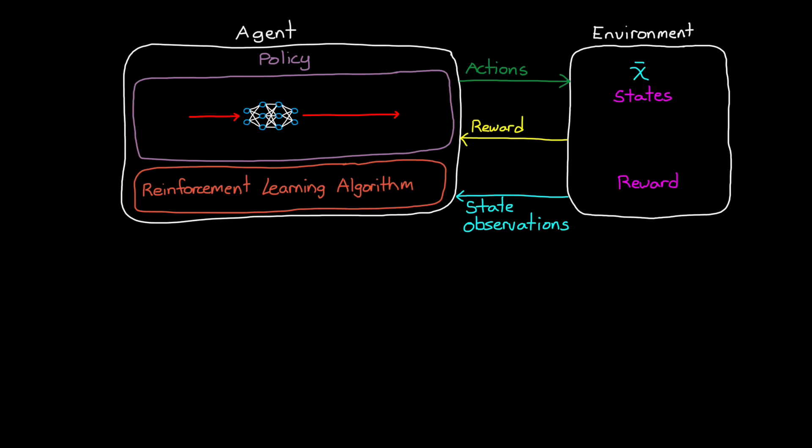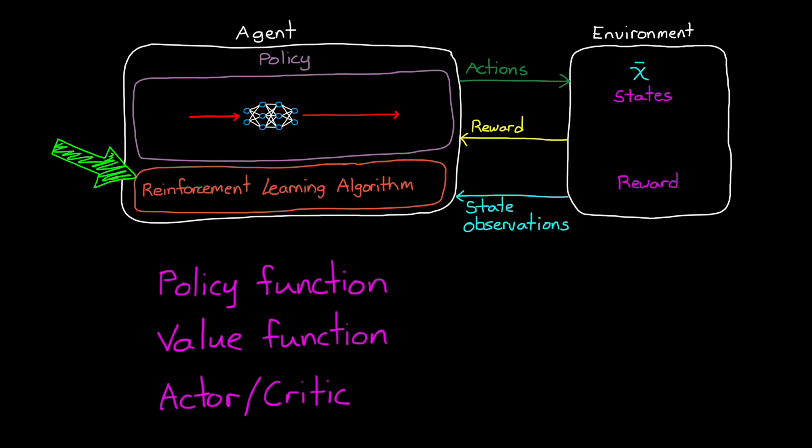Now, I keep saying we use these neural nets to represent a policy in the agent, but as for exactly what that means, we need to look at a high-level description of a few different classes of reinforcement learning algorithms: policy function-based, value function-based, and actor-critic. Now, the following will definitely be an oversimplification, but if you're just trying to get a basic understanding of the ways RL can be approached, I think this will help get you started.